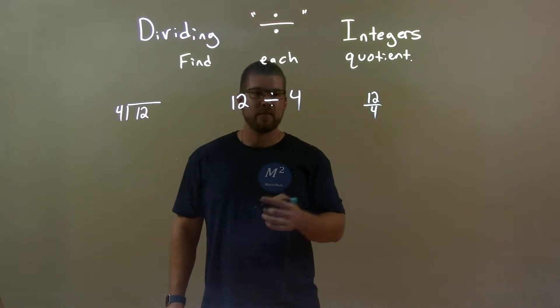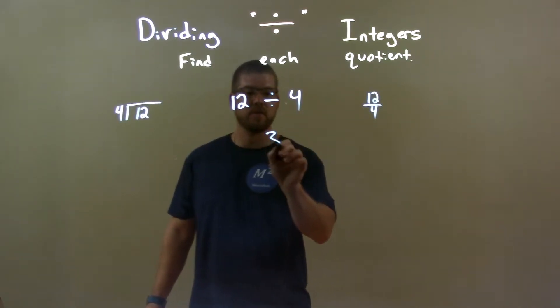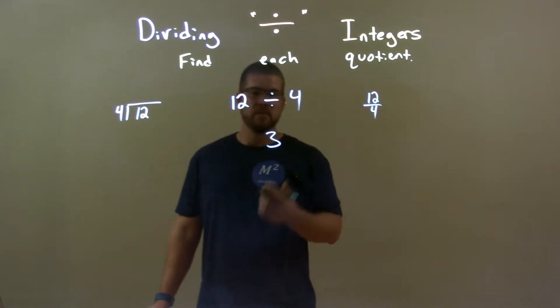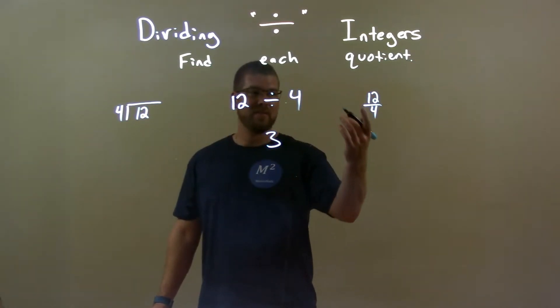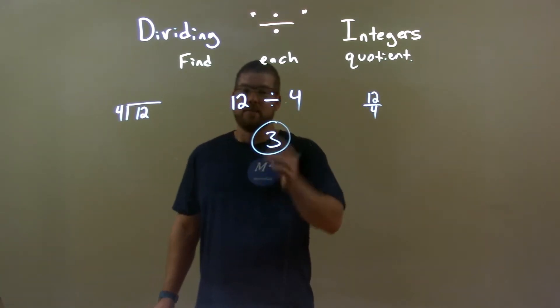The same question remains: How many times does 4 go into 12? Well, that's actually 3, right? 3 times 4 is 12. A positive divided by a positive is just positive, so this is pretty easy. Positive 3 is our answer.